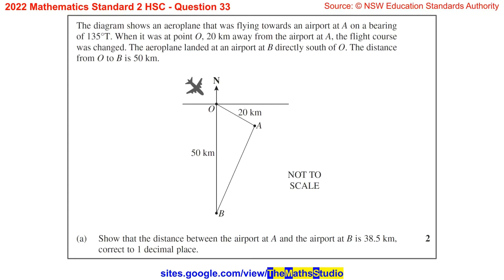Question 33. The diagram shows an aeroplane that was flying towards an airport at A on a bearing of 135 degrees true. When it was at point O, 20km away from the airport at A, the flight course was changed.